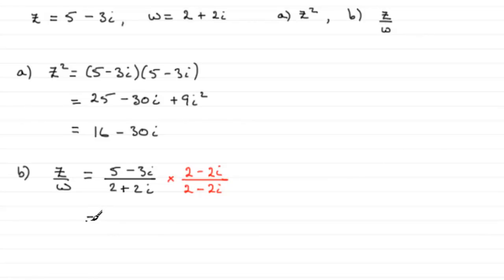So if we expand this, we've got 5 times 2 which is 10, and then 5 times the minus 2i is minus 10i, minus 3i times 2 is minus 6i, and then minus 3i times minus 2i is plus 6i squared.